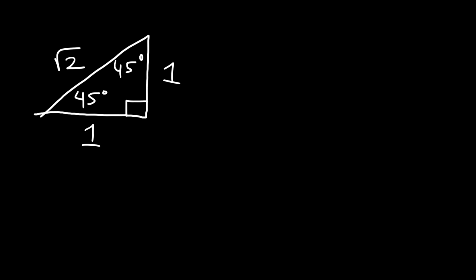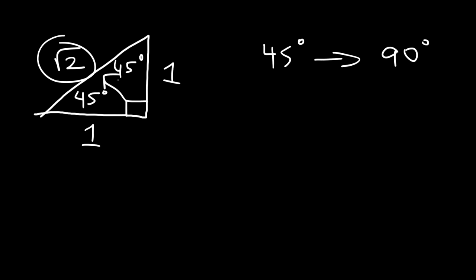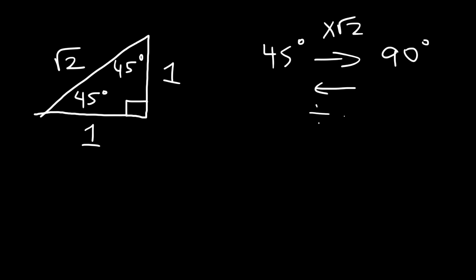If you have the side across the 45-degree angle and you want to find the side across the 90-degree angle — the hypotenuse — all you need to do is multiply by the square root of 2. If you have the side across the 90-degree angle and want to find the side across the 45-degree angle, you divide by the square root of 2. Now let's put this into practice.